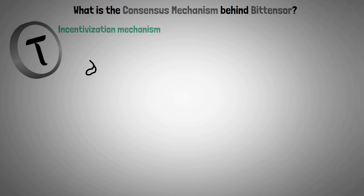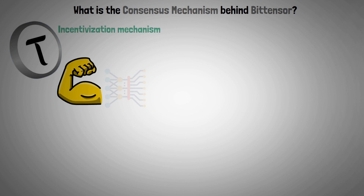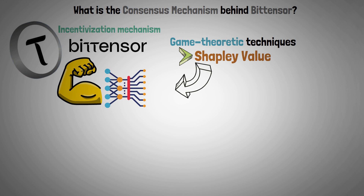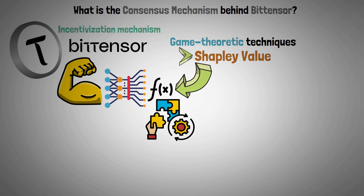But what is the consensus mechanism behind BitTensor? The incentivization mechanism behind TAU evaluates the effectiveness and dependability of models inside the BitTensor network using game theoretic scoring techniques, such as the Shapley value, which gives each model a value according to how much it contributes to the network's total intelligence and prediction accuracy.